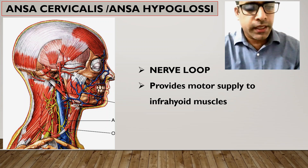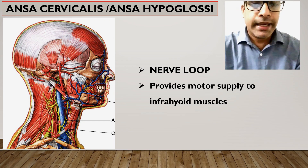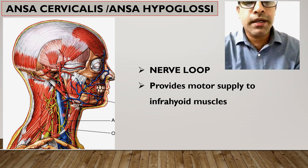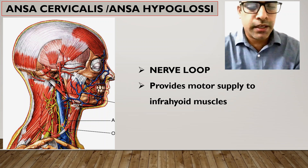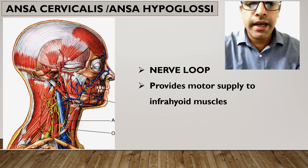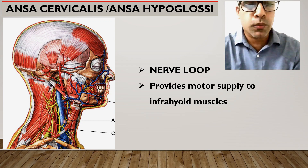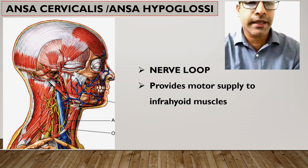The ansa cervicalis is a very thin nerve loop located in the cervical region, which is why it is called ansa cervicalis. Its exact location is embedded in the anterior wall of the carotid sheath. In the carotid triangle region, the carotid sheath contains the internal jugular vein, common carotid artery, and the vagus nerve. In relation with the anterior wall of the carotid sheath, we have this very thin nerve loop, called ansa cervicalis — otherwise called ansa hypoglossae.